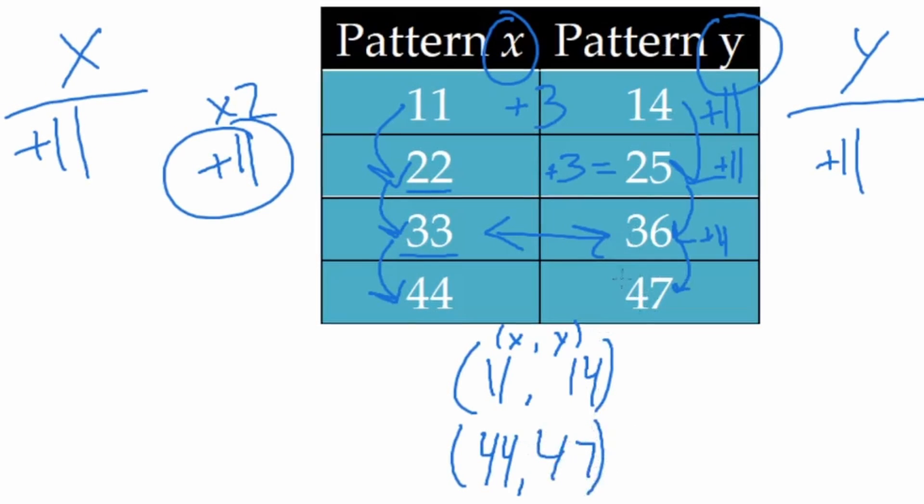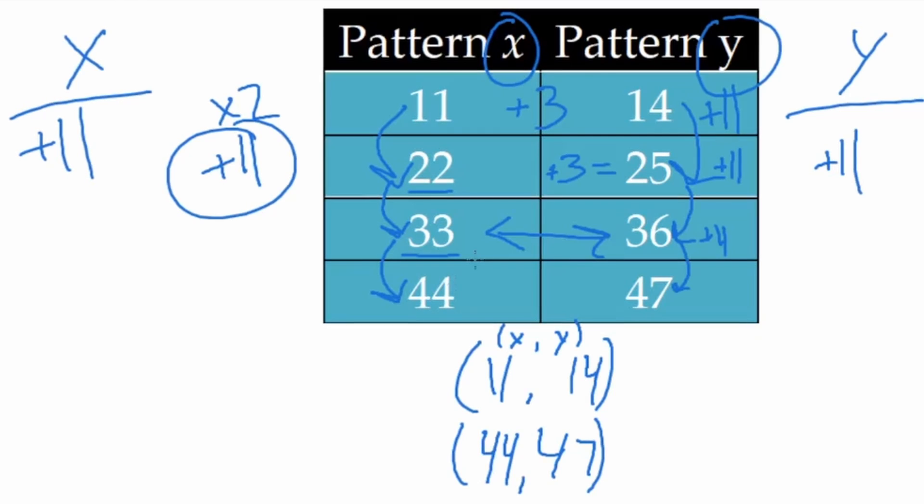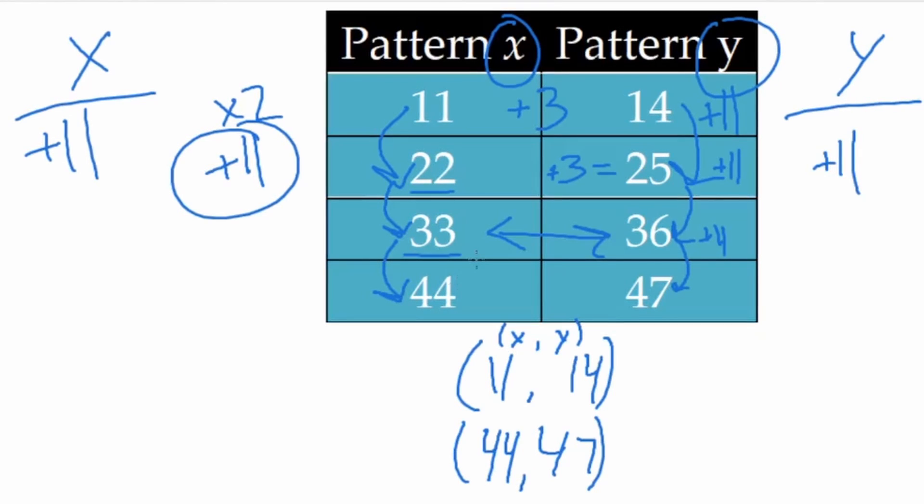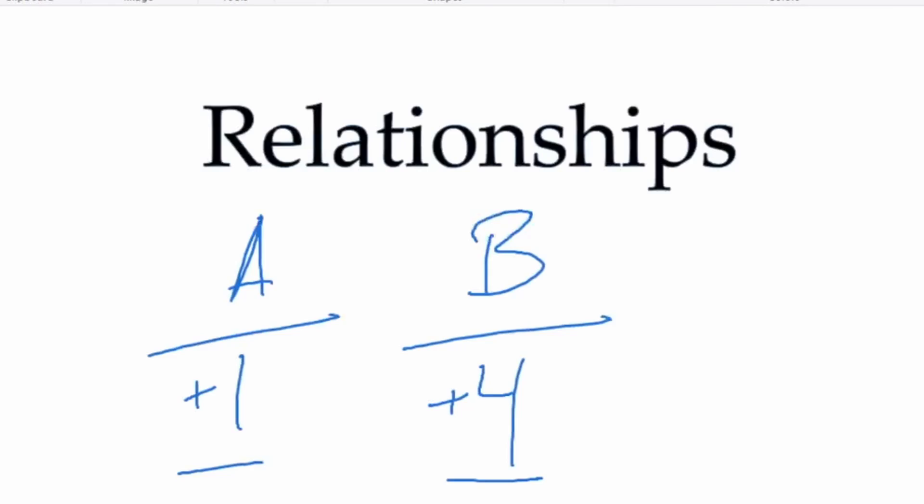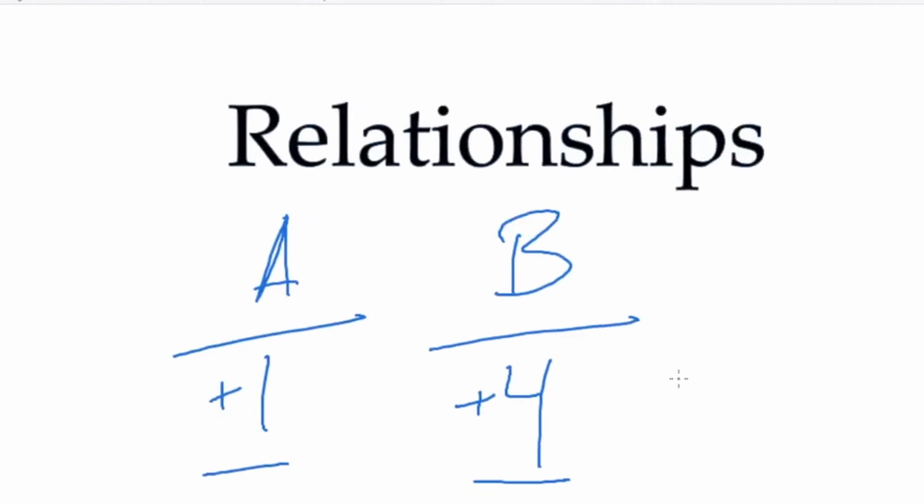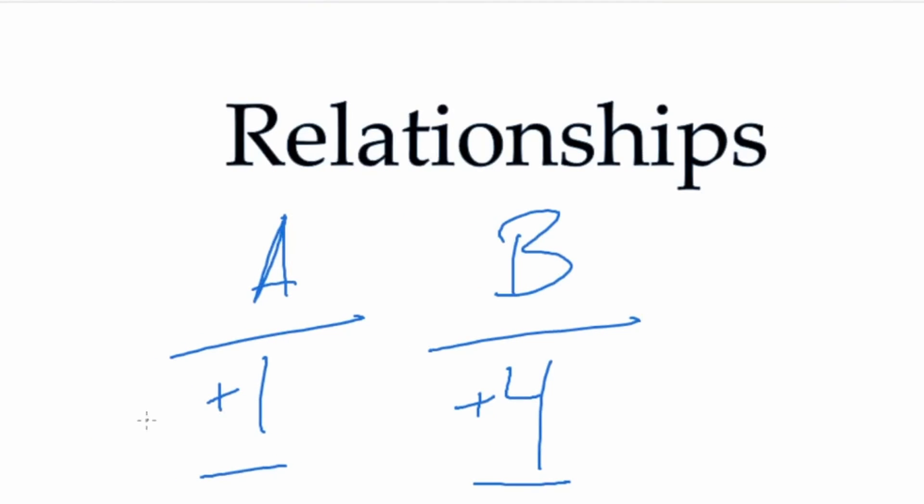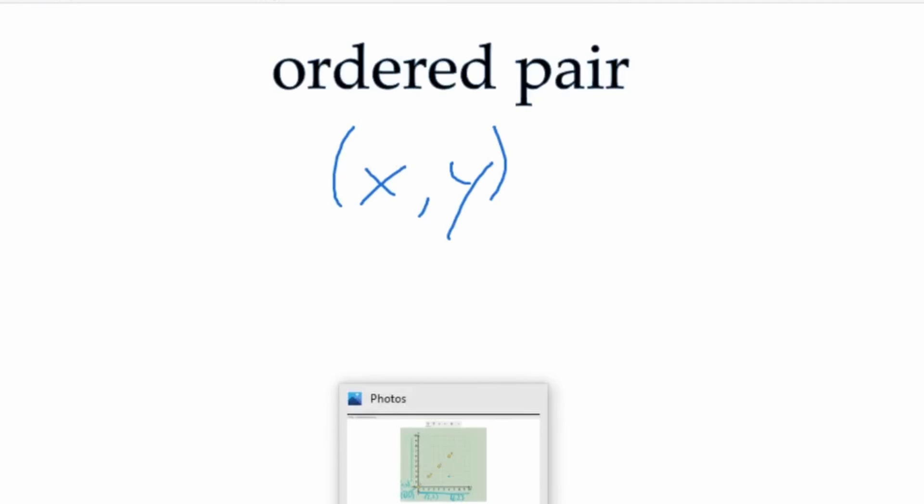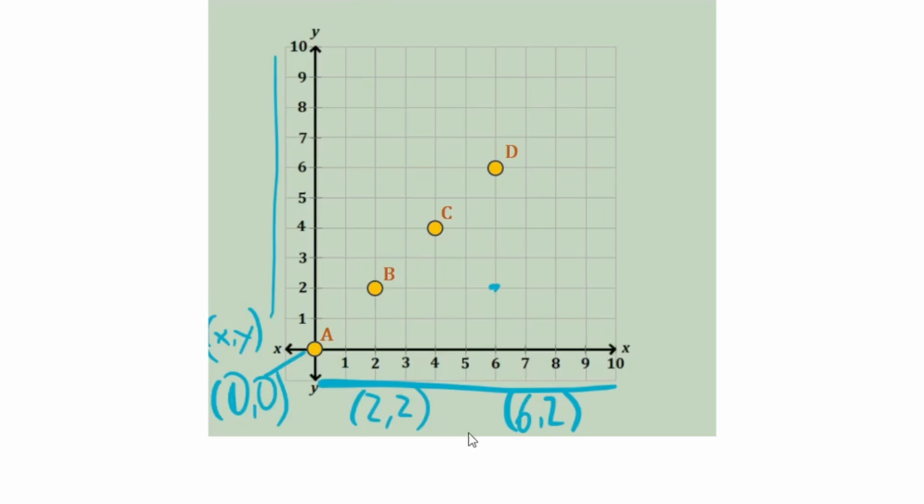Since we already knew the Y values in this pattern are going to be three greater than the values in the pattern X. We looked at relationships and the comparison between two patterns, how sometimes they're related and connected in certain ways. And ordered pairs show us a specific type of rule that we can show on a coordinate plane, those groupings of an X and a Y value, which you can plot on the grid. So great job, everybody. You are ready to tackle problems about analyzing relationships and patterns.